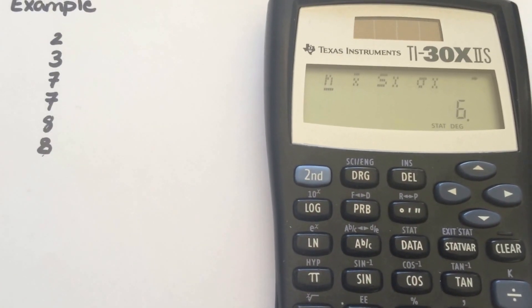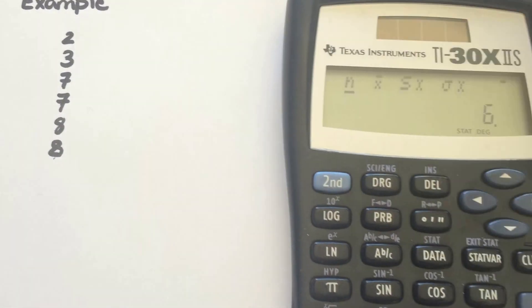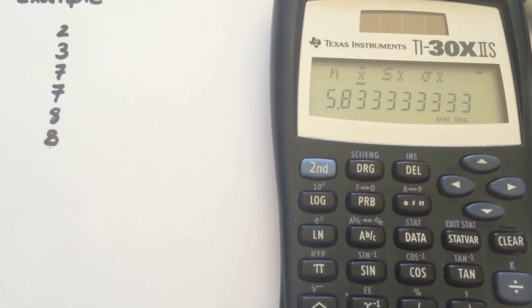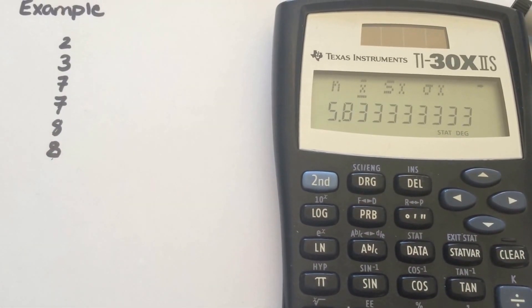So it's telling me n is 6, which is right. There's 6 data values. Scroll, and there's your mean: 5.833. That's your mean.